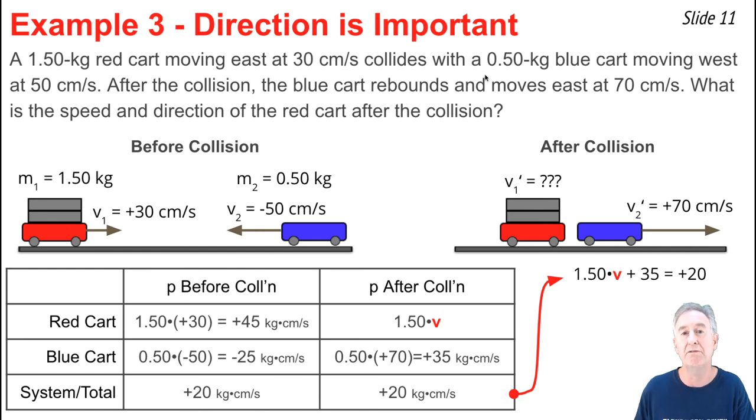I do my algebra by getting the v term by itself on one side of the equation. That means I have to subtract 35 from both sides. The equation becomes 1.5v equal 20 minus 35, or negative 15.